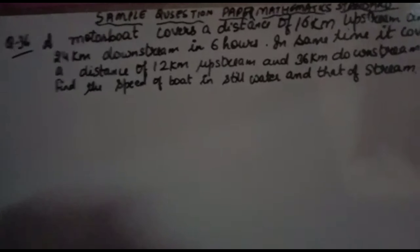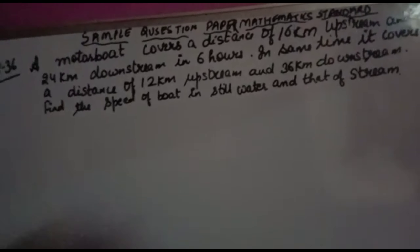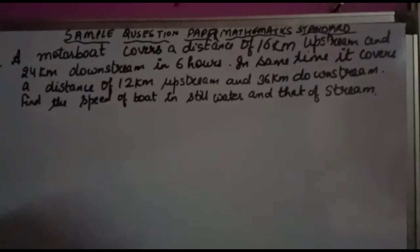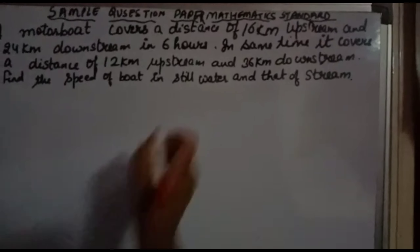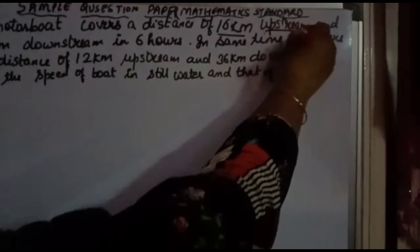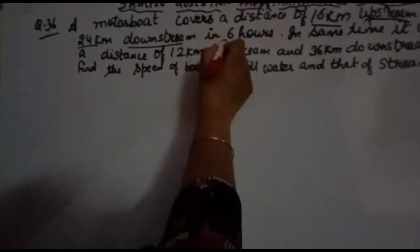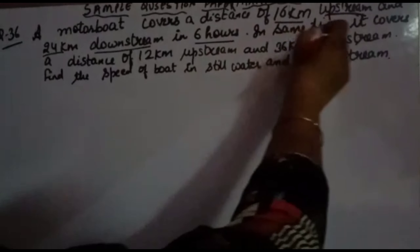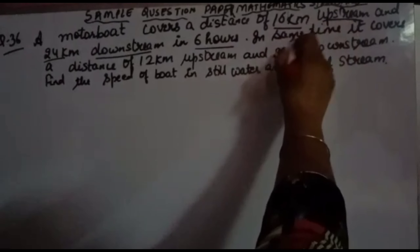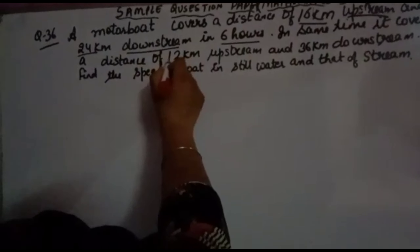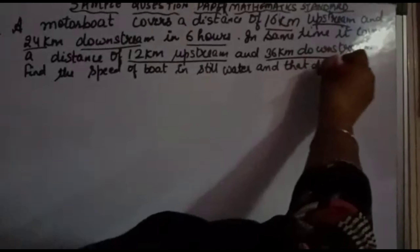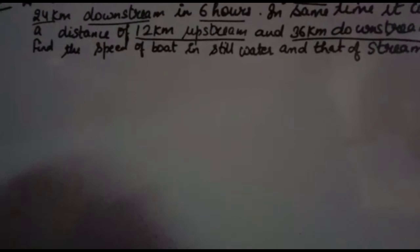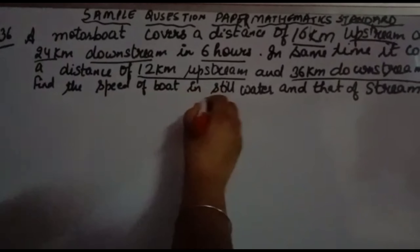Welcome back to your favorite channel Math Helpers. Sample question paper, question number 36: A motor boat covers a distance of 16 km upstream and 24 km downstream in 6 hours. In the same 6 hours, it covers a distance of 12 km upstream and 36 km downstream.